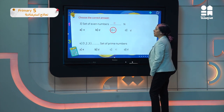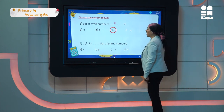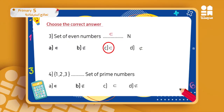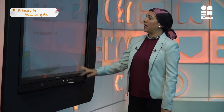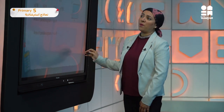Question four: the set of elements one, two, and three — is it a subset of the set of prime numbers? We know that the element one is neither a prime number nor a composite one, so it is not a part of the set of prime numbers. Therefore this set is not a subset of the set of prime numbers.